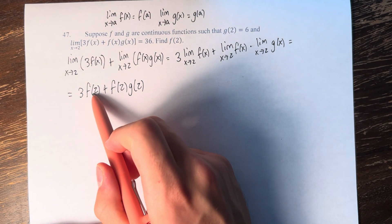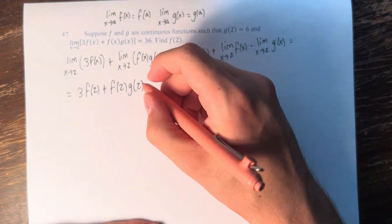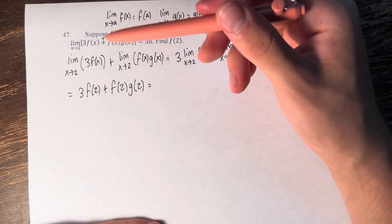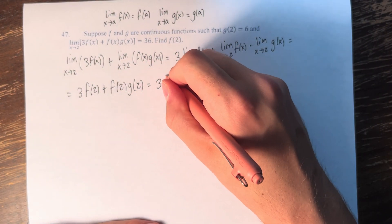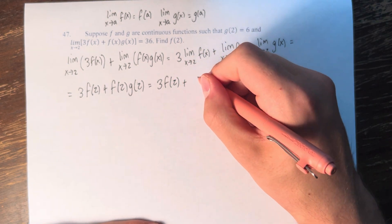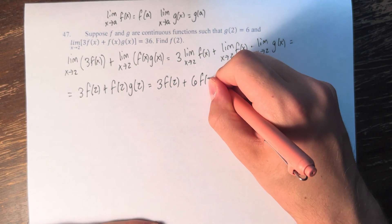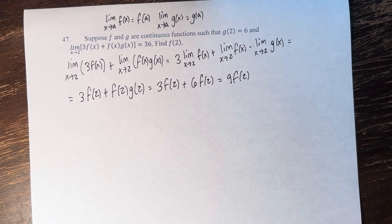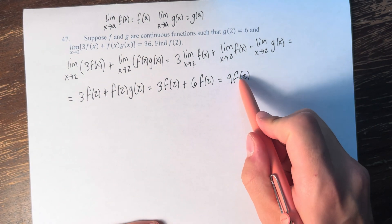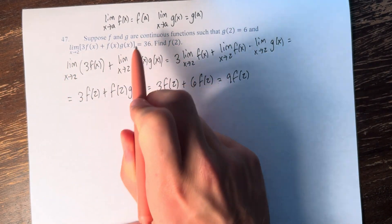So we have 3 times f of 2 plus f of 2 times g of 2. We have that g of 2 is equal to 6, so this is 3 times f of 2 plus f of 2 times 6, which is 6 times f of 2. 3 plus 6 gives us 9, so this is 9 f of 2. So 9 times the value of f of 2 is equal to 36, since that's what this original statement was equal to.